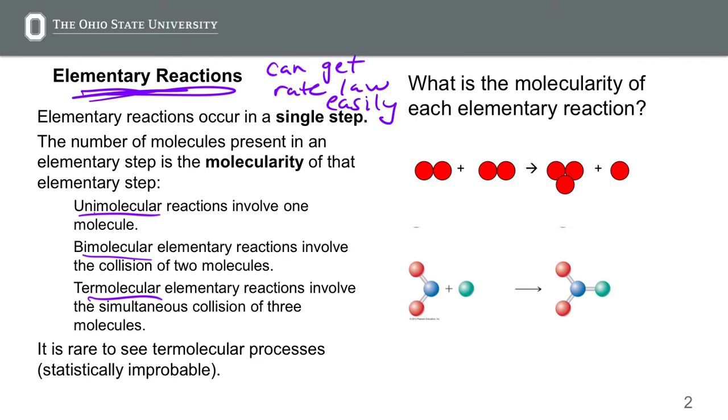Bimolecular, we have to have two molecules colliding. Termolecular, we have to have three molecules colliding. Those are very rare because statistically speaking, it's really hard to make three molecules collide at the same time.